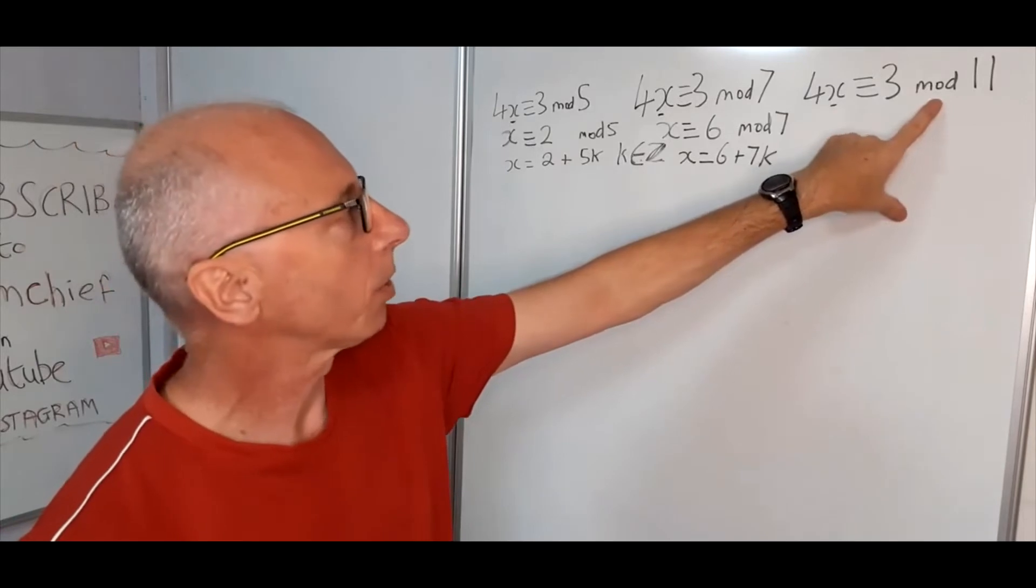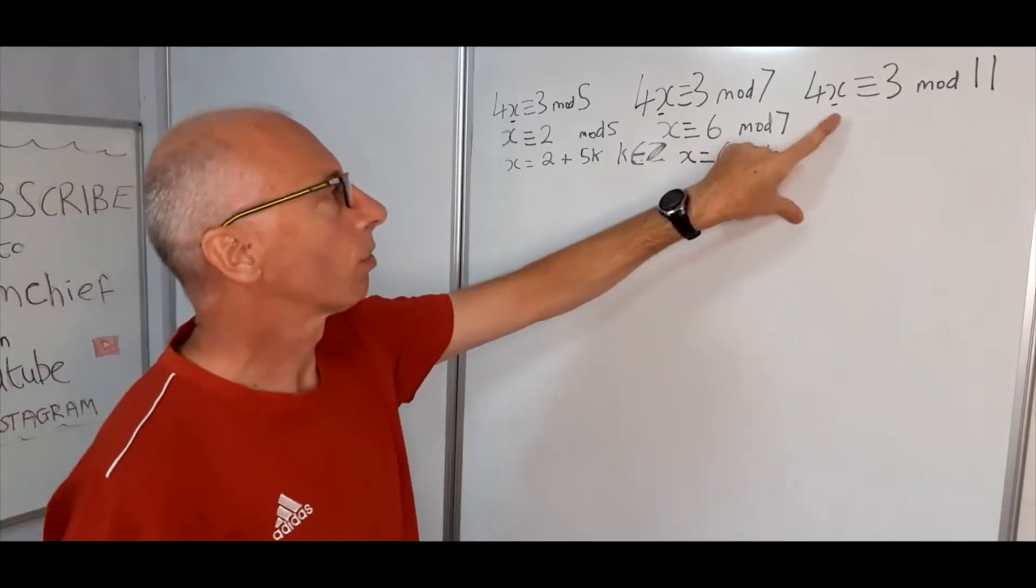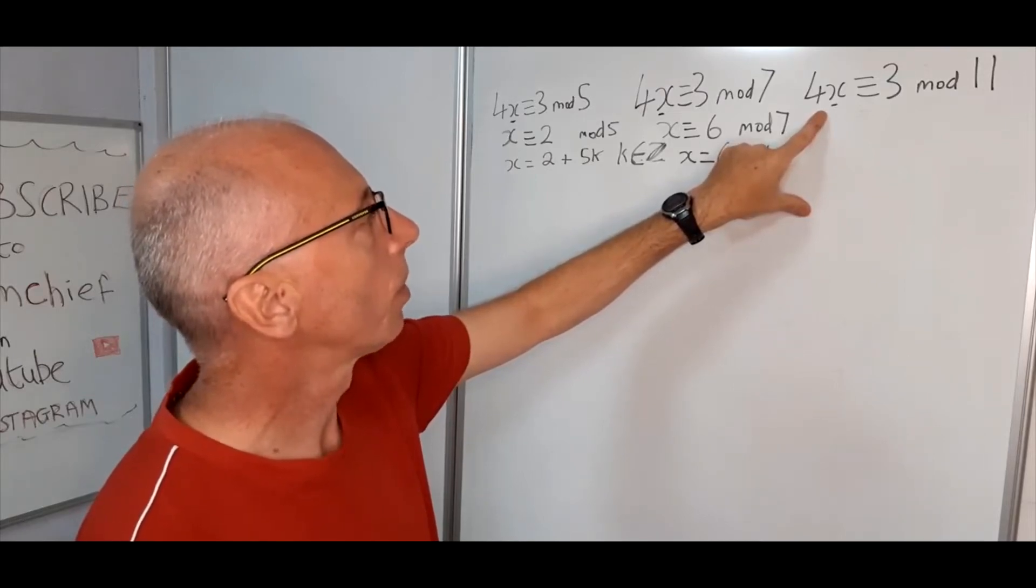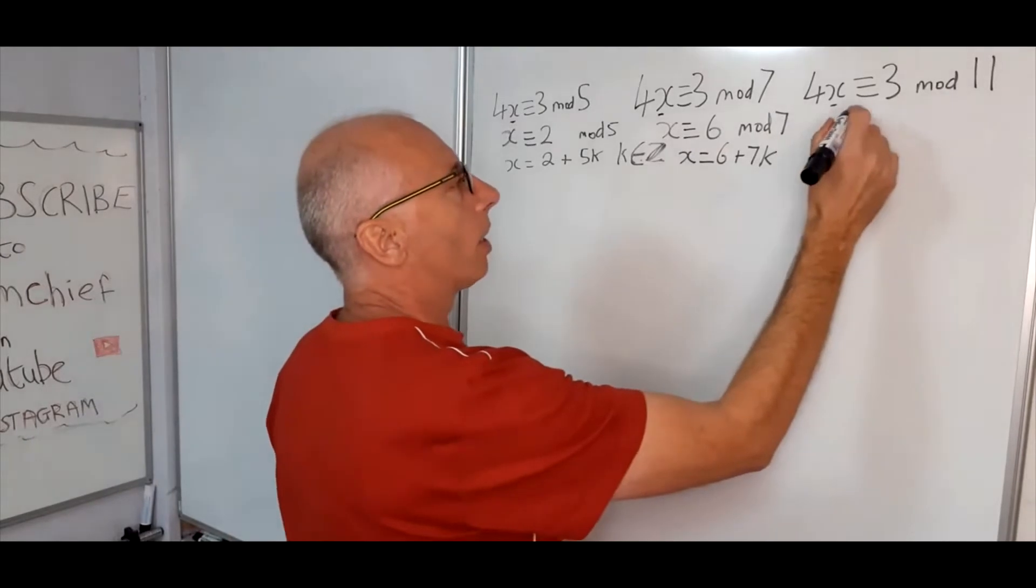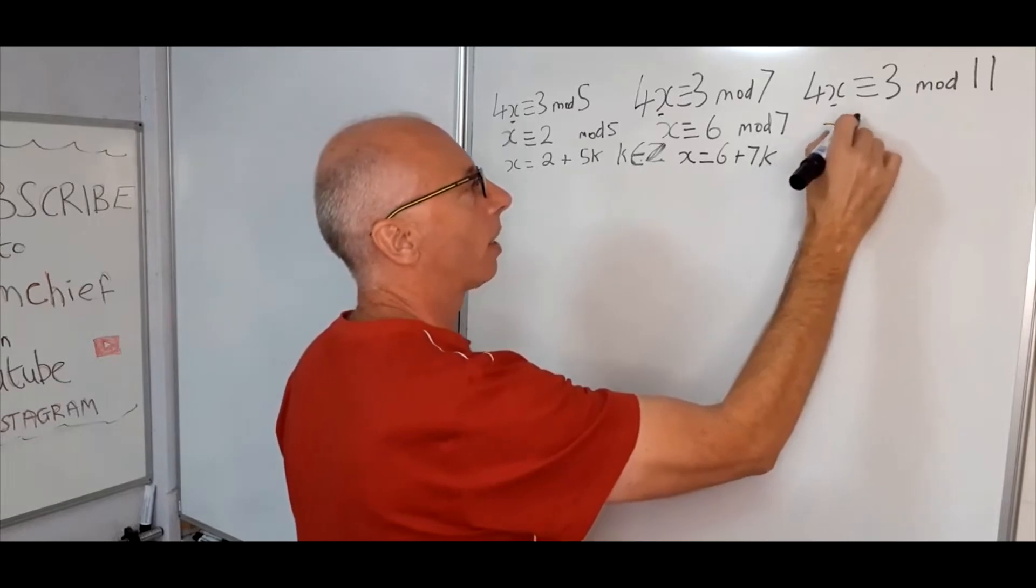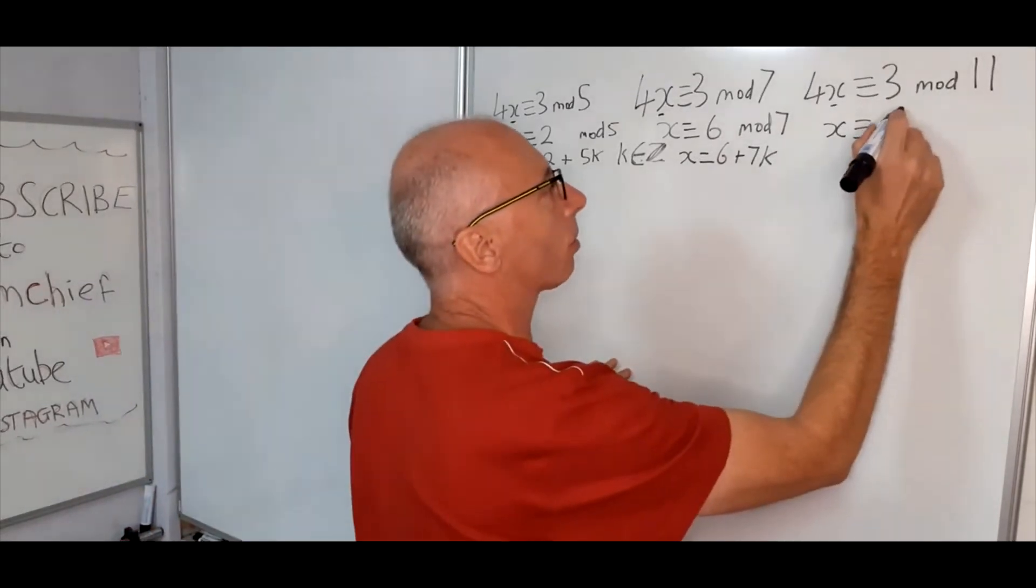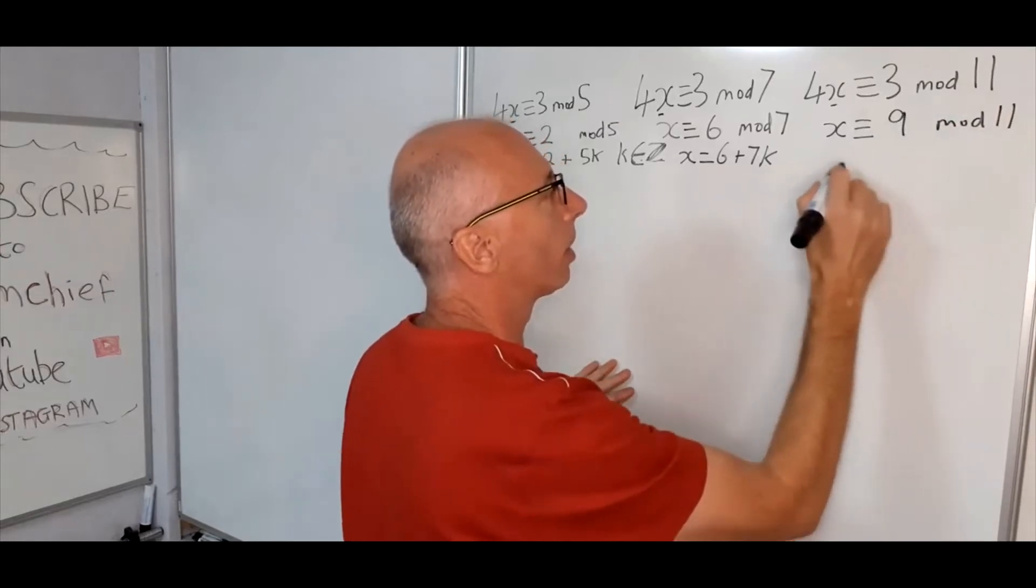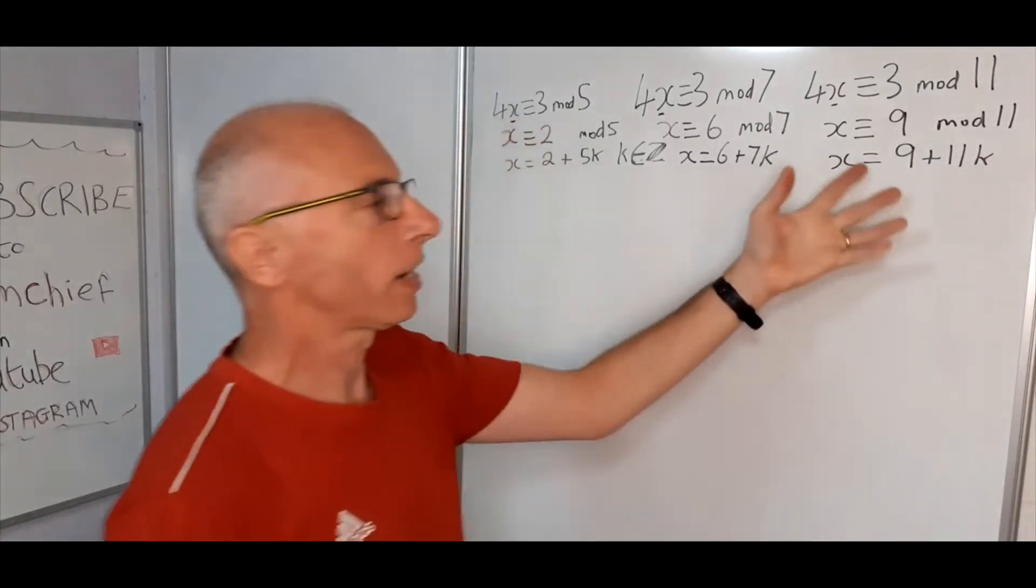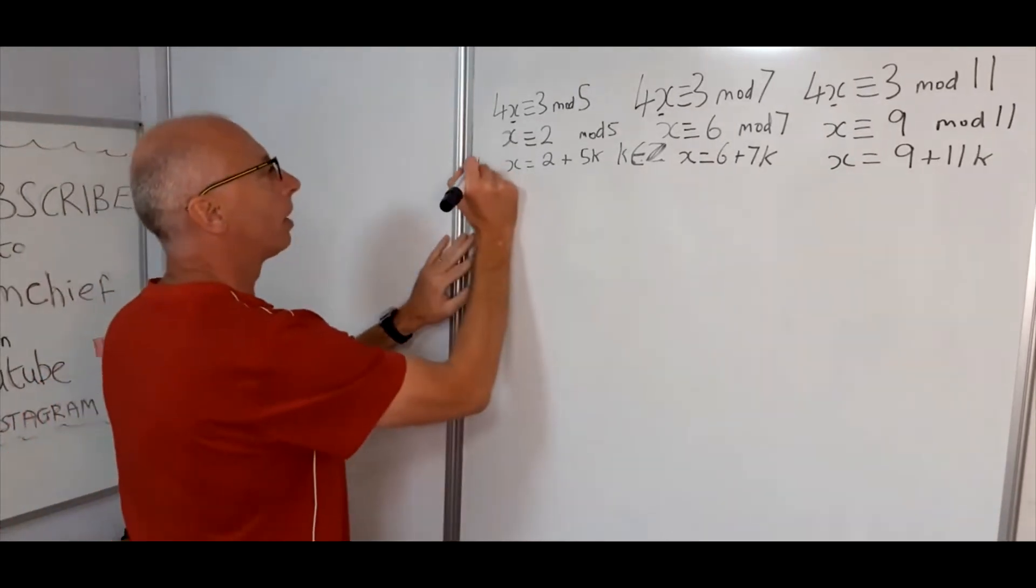Next one. We're going to take a little bit more time because we've got modulo 11. So we want 4 times x to give us something congruent with 3. So we've got 4, 8, 12, 16, 20, 24, 28, 32, 36. 36 looks good. So 36 is congruent with 3 mod 11. So therefore we can say that x is congruent with, well for 36 it's 4 times 9. So x is congruent with 9 mod 11. So therefore we can write x equals 9 plus 11k. So for any random k. So that's the first stage completed.